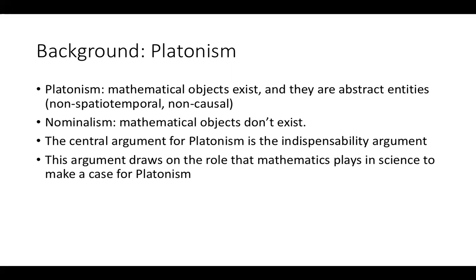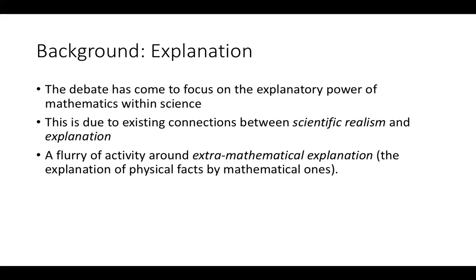The thought is that mathematical objects also play a central role in our scientific theories, and so we should believe in their existence — despite the fact that mathematical objects, being abstract entities, are unobservable because they're not spatially or temporally located and don't have any causal properties. The debate around the indispensability argument has come to focus on the explanatory power of mathematics within science, because not just any indispensability is sufficient for ontological commitment.